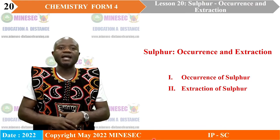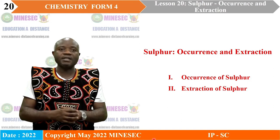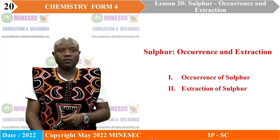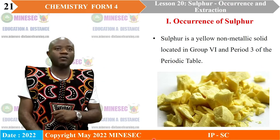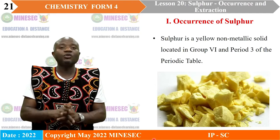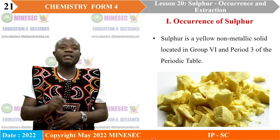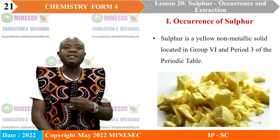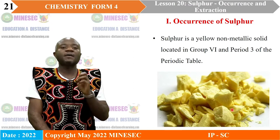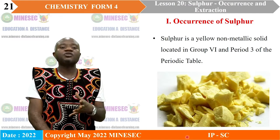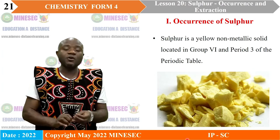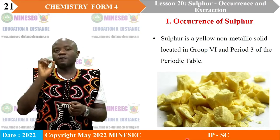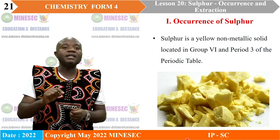Sulfur: Occurrence and Extraction. This lesson has two parts. We are going to look at the occurrence of sulfur, and after that, we'll look at the extraction of sulfur. Occurrence of sulfur: Sulfur is a yellow non-metallic solid that is located in group 6 in the periodic table and in period three. From the image, we can see some yellow solid particles of different sizes — these particles are actually sulfur particles. Sulfur exists as a yellow solid and is a non-metal, located in group 6, period three.